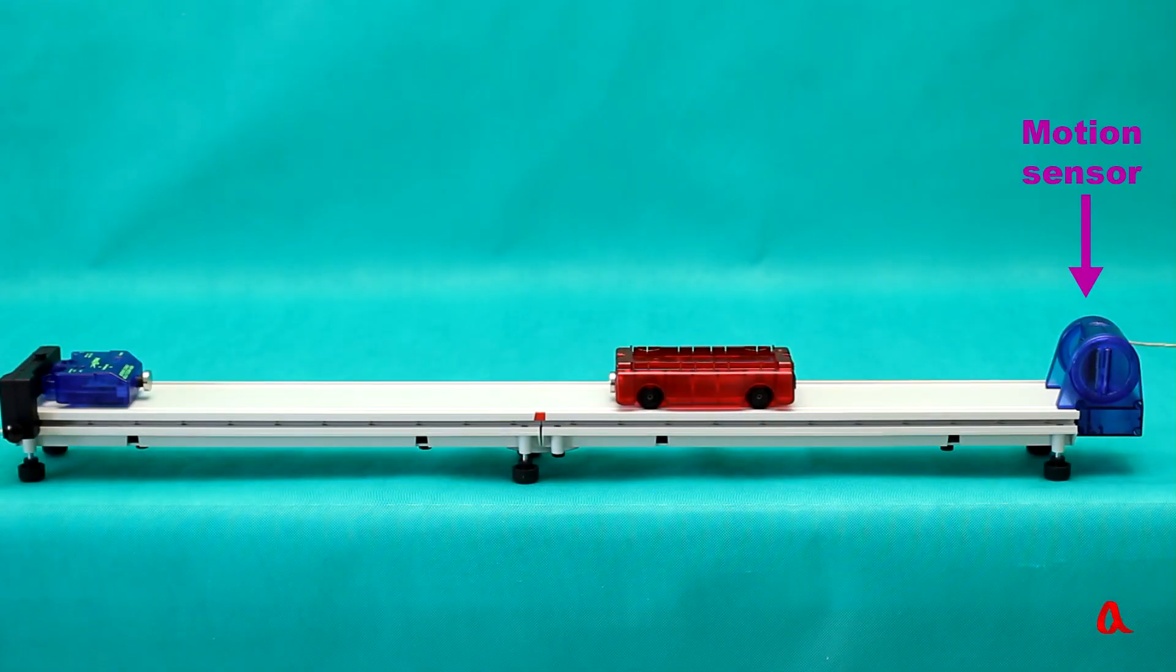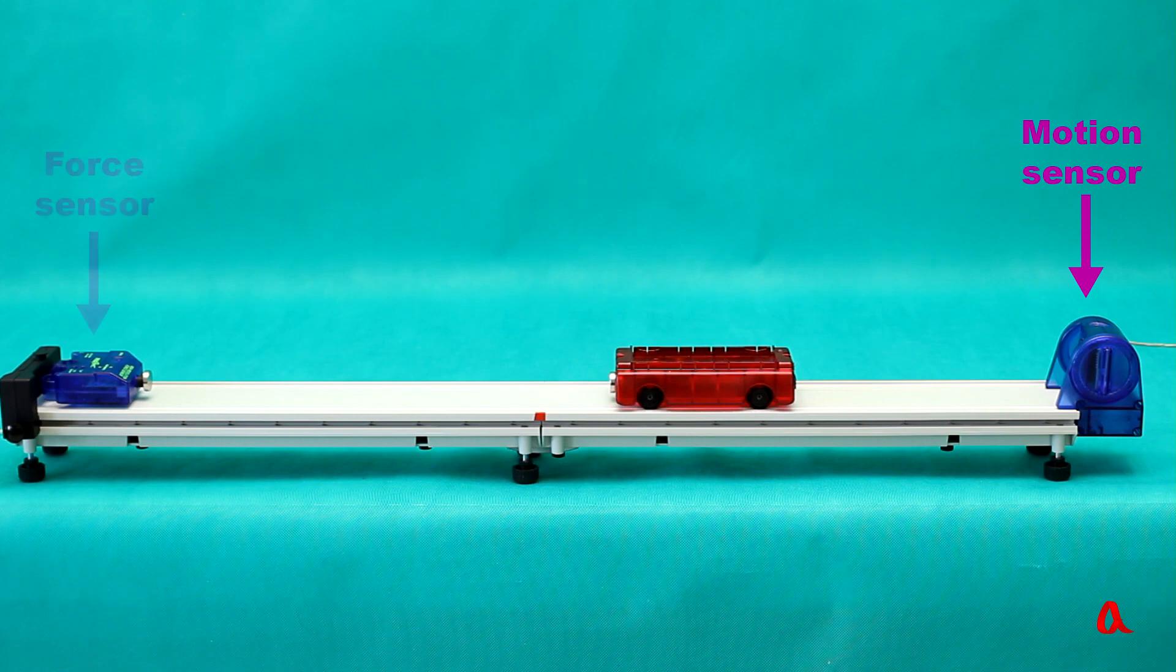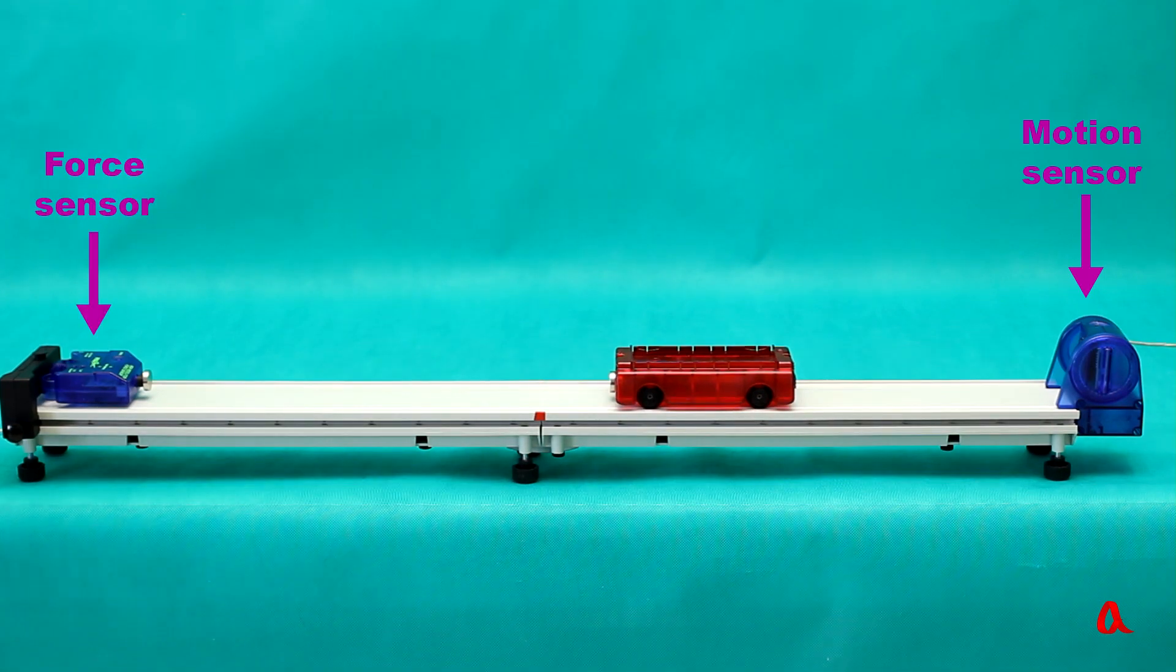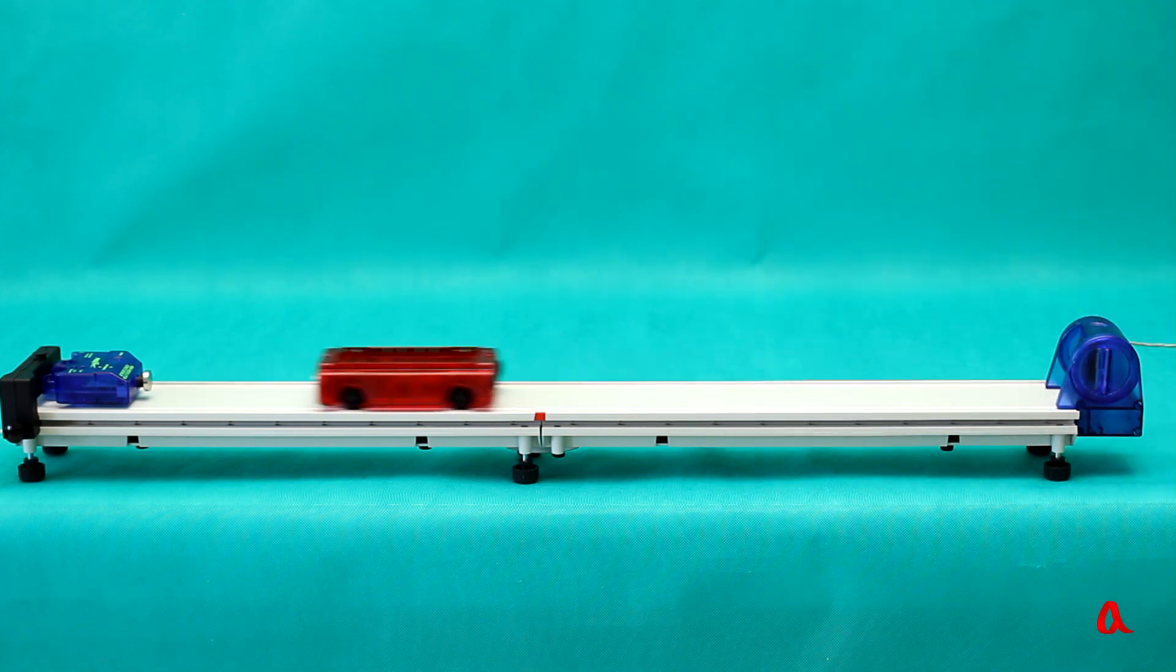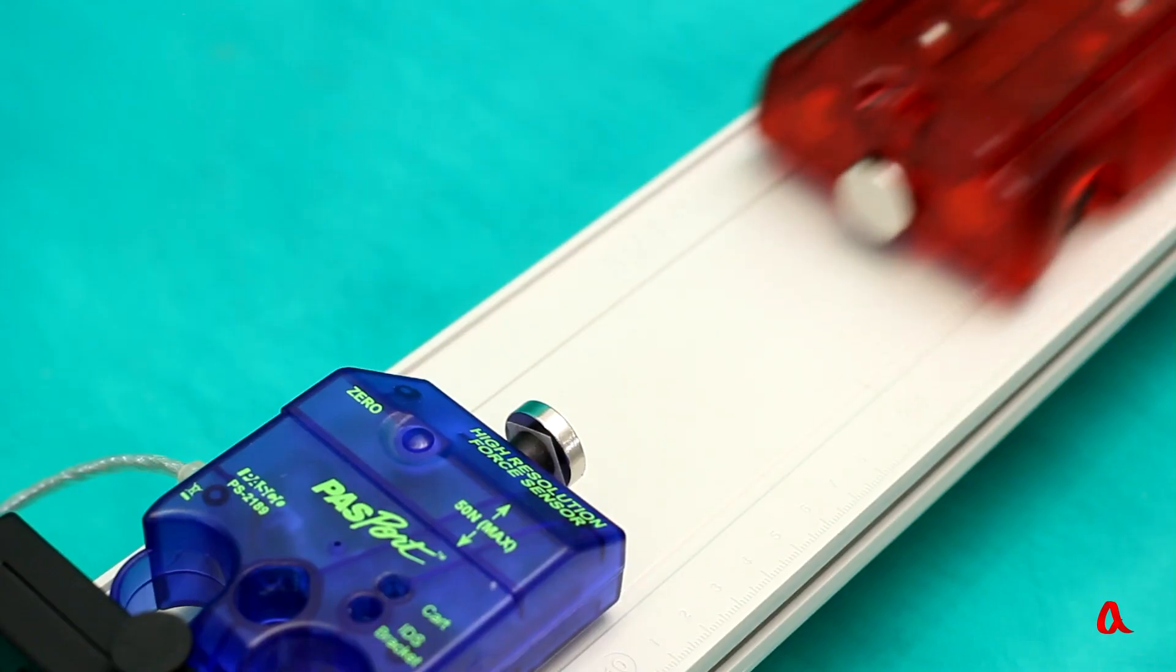We have installed a motion sensor at one end of the track and a force sensor at the other end. We have put a trolley onto the track. The trolley is pushed away from the force sensor before hitting it by means of powerful magnets.